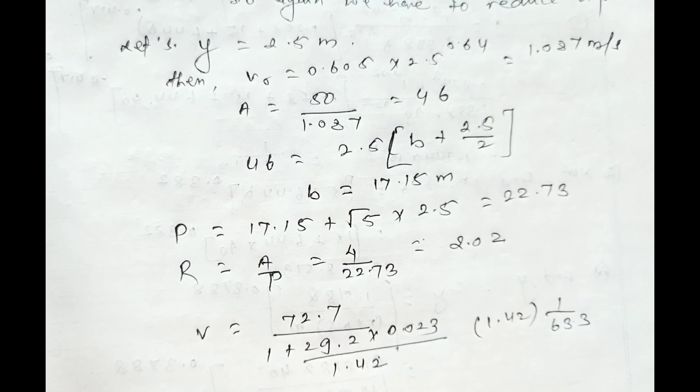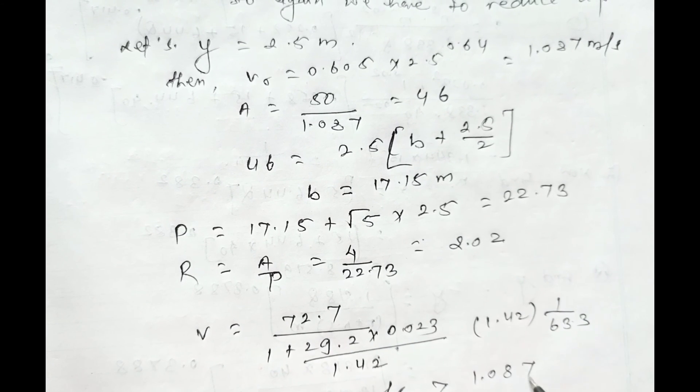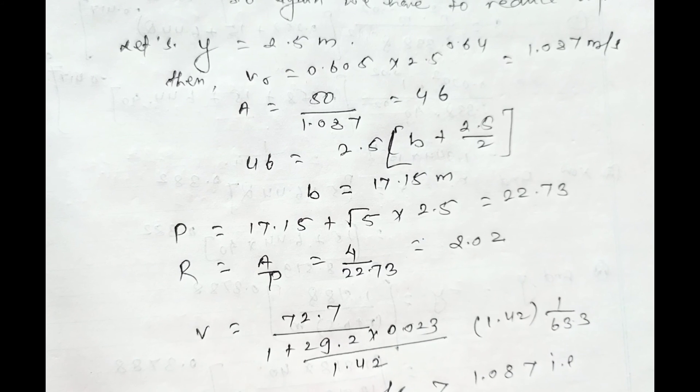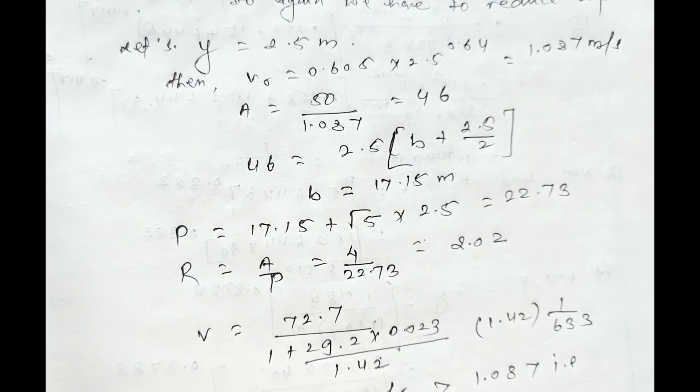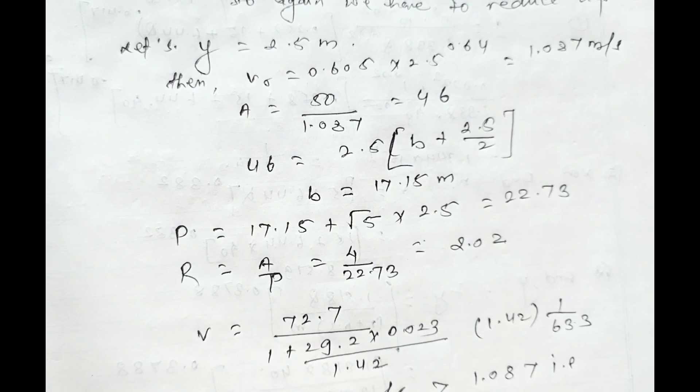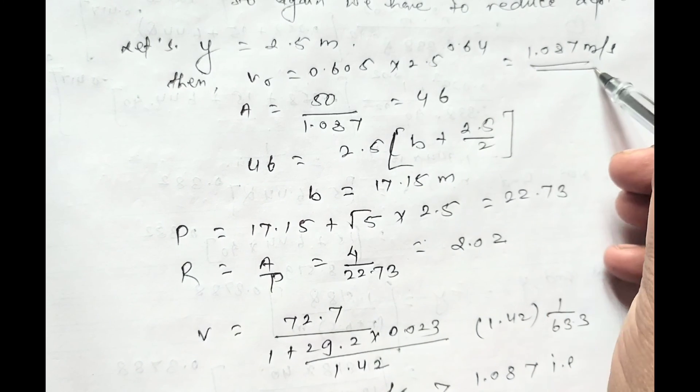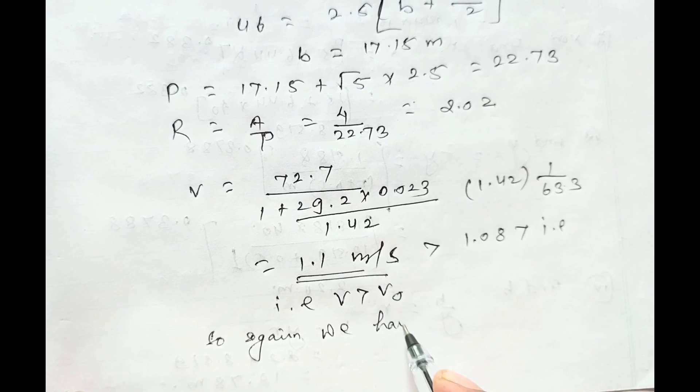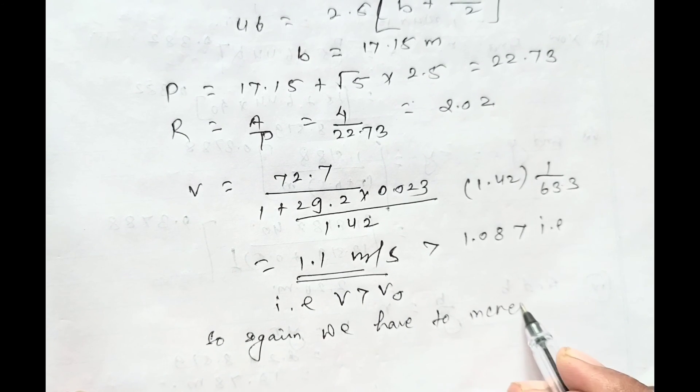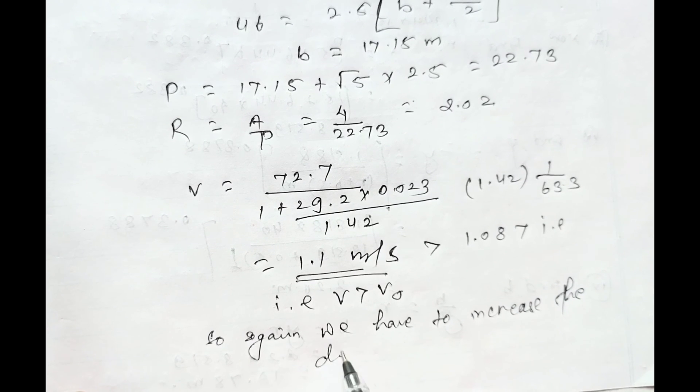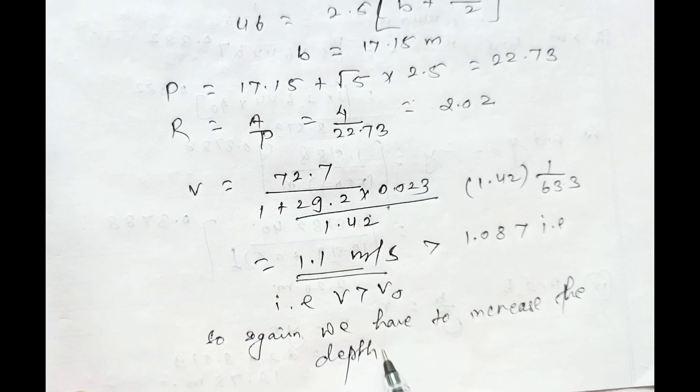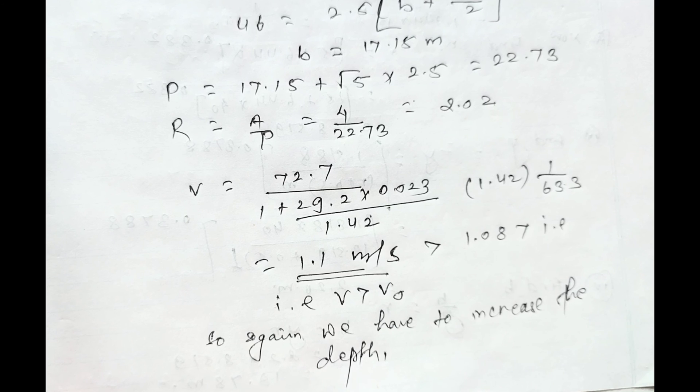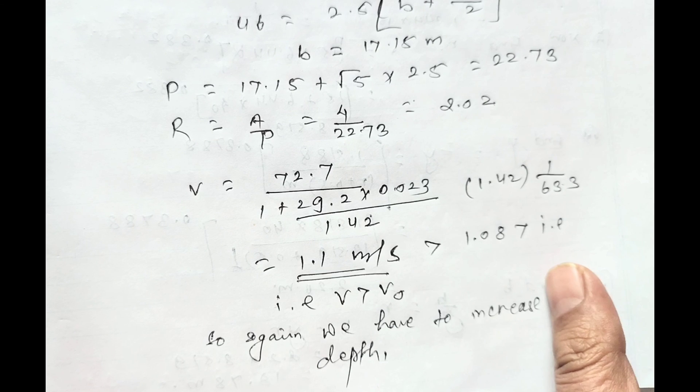Which is greater than 1.087, that is V is greater than V₀. So again we have to increase the depth and repeat all these steps as we have done above. Repeat all these steps until the value of V equals V₀. When the value of V equals V₀, the assumed depth is the final one and is the required depth for the given condition.